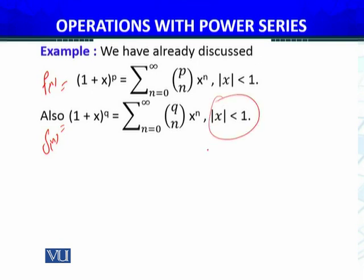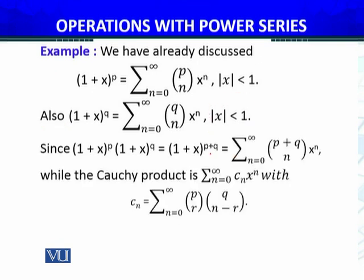Since we multiply these two, these functions, I know that (1+x)^p times (1+x)^q equals (1+x)^(p+q). Now this function which is written here equals...